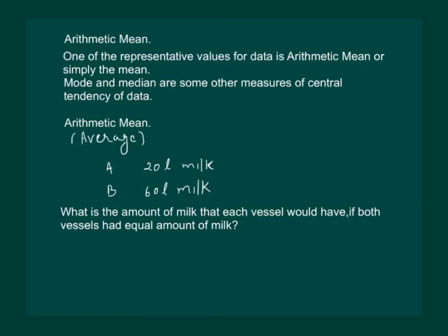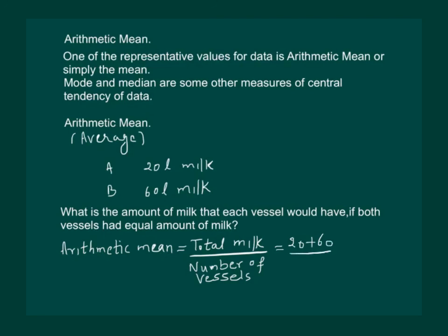When we ask this question, we are actually seeking the arithmetic mean or average. That means we calculate the total milk, which is 20 + 60 liters, divided by the number of vessels, which is 2. This gives us 80 divided by 2, which equals 40 liters.